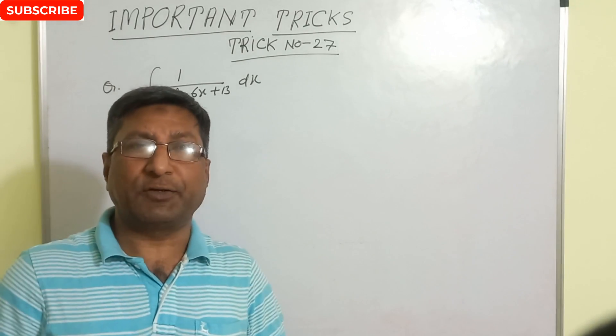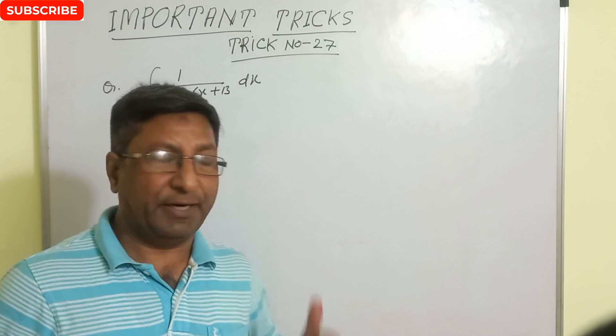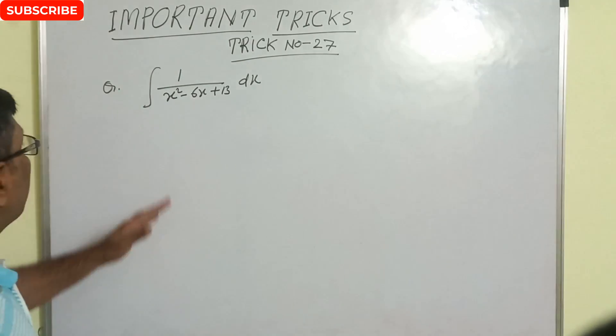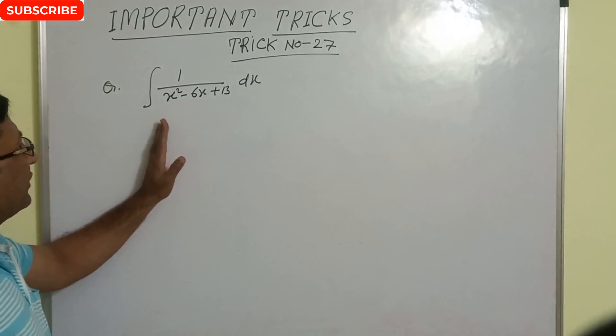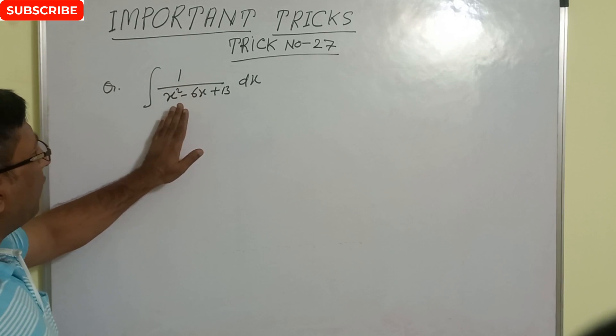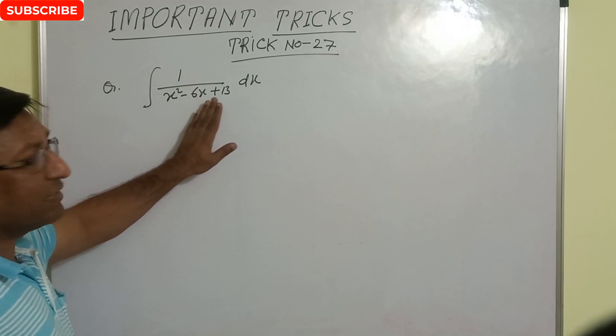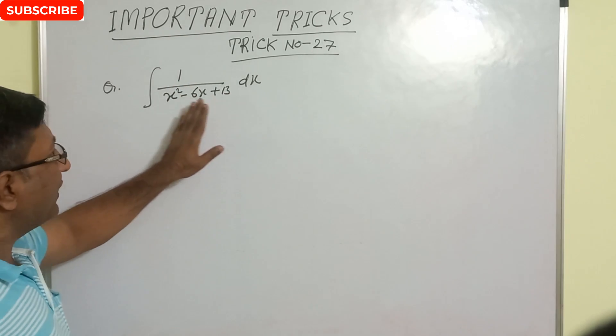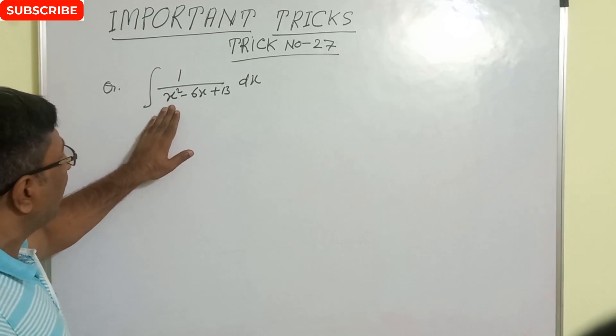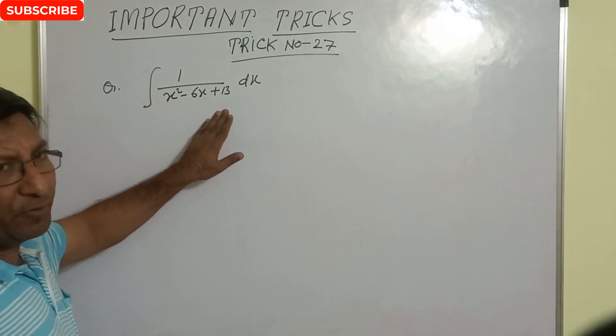Most important trick of integration — let us see. Integration of 1 upon x squared minus 6x plus 13: this is in the form of a quadratic equation.